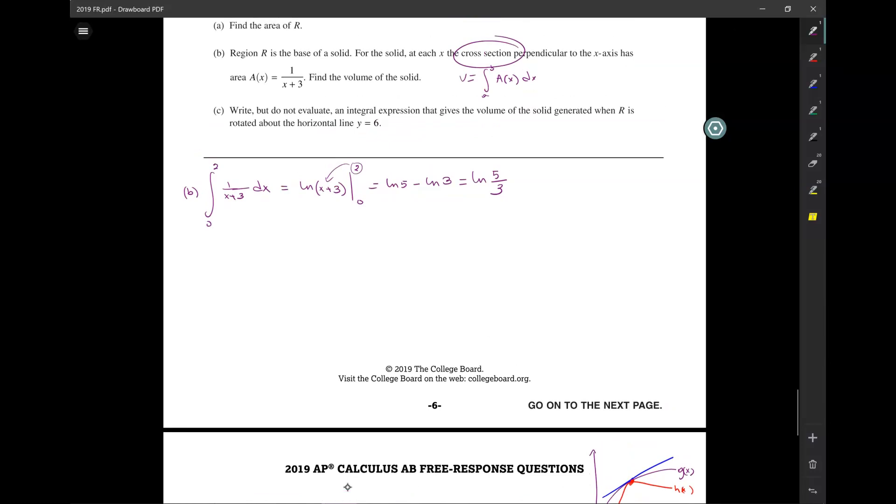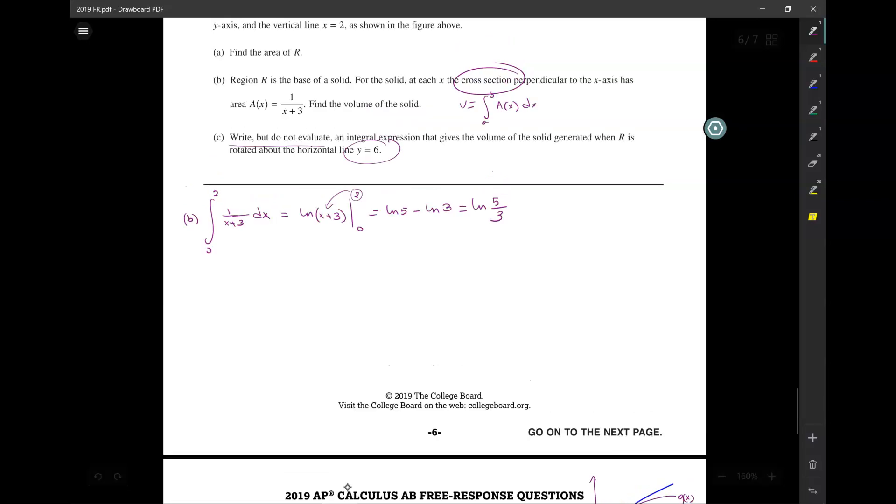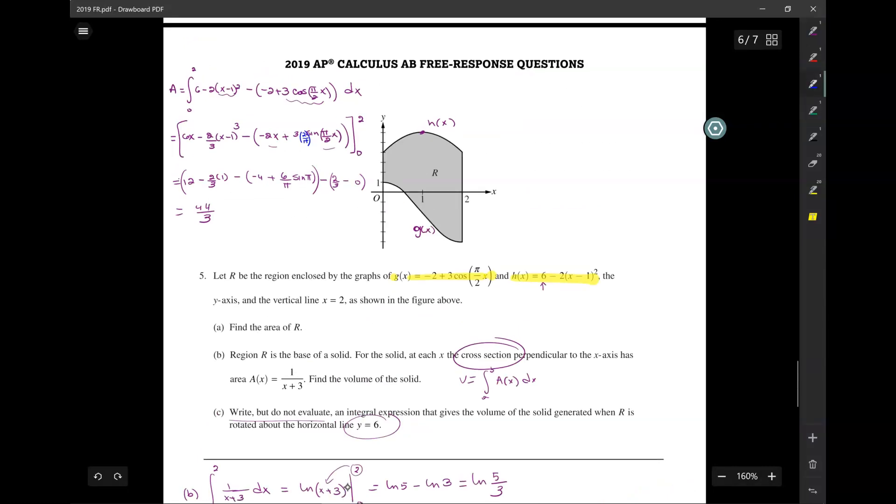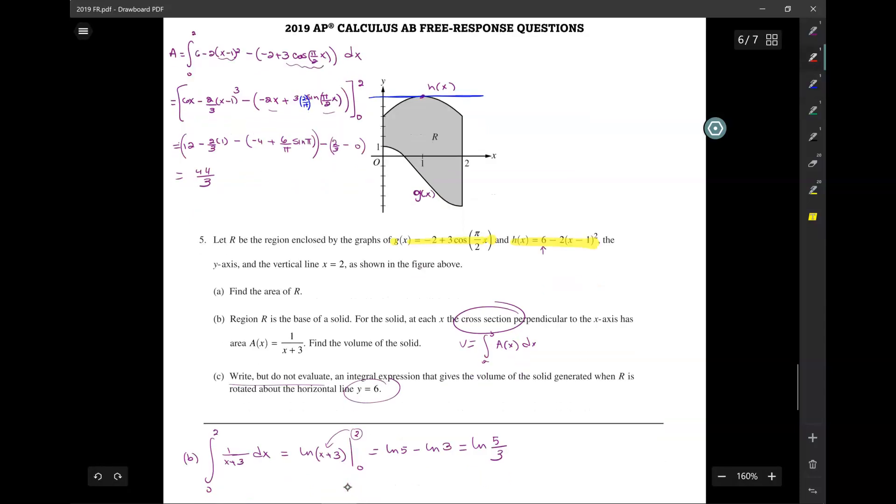Last, write but do not evaluate an integral expression that gives the volume of a solid generated when r is rotated about the horizontal line, y equals 6. So we just need an integral. When it's revolved around the line, y equals 6. So where is y equals 6? That's right here. Now this has two radii. The way we do this is this. There are two radii because there are two functions.